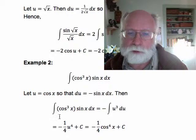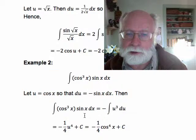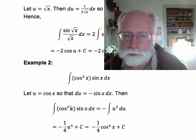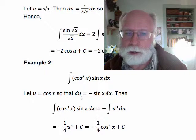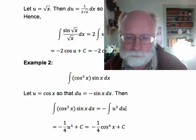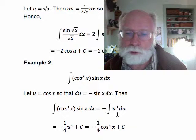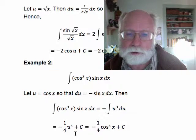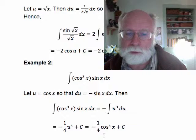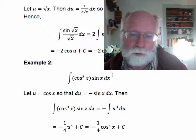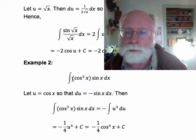So then the integral of cos cubed x times sin x dx gives us the integral of minus u cubed du. We're just integrating this algebraic function u cubed du, so we get minus one quarter u to the fourth plus a constant. If we substitute back for what u is we get minus one quarter cos to the fourth power x plus a constant.